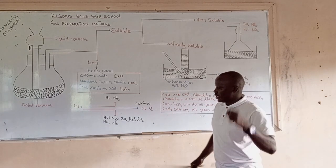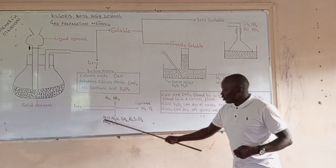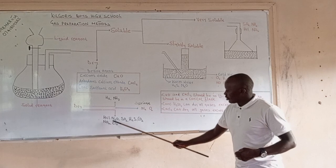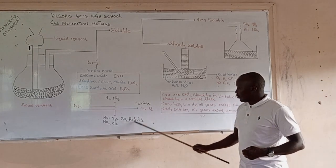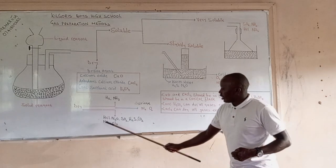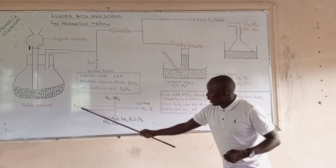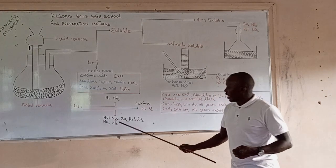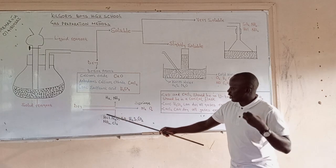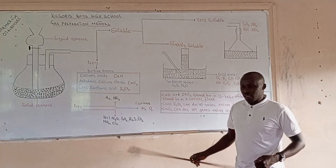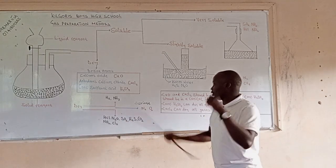Upward delivery is also called the downward displacement of air because these gases are less dense than air. Hydrogen chloride gas, nitrogen monoxide gas, sulfur dioxide gas, hydrogen cyanide gas, carbon dioxide gas, nitrogen dioxide gas, and chlorine gas — once dried, all of these are collected by the downward delivery method, also called the upward displacement of air.